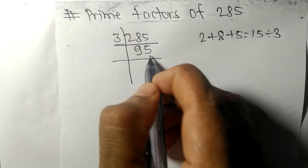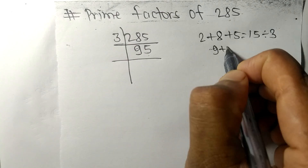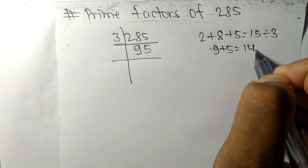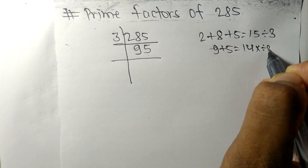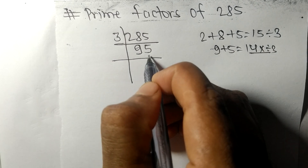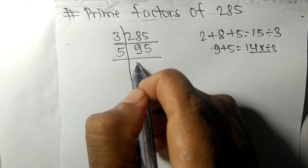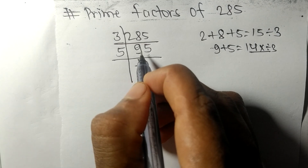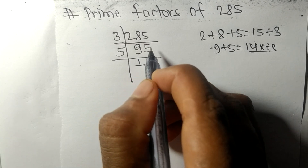95 ends in 5 and its digit sum is 9 plus 5, which equals 14. 14 is not divisible by 3, but 95 is divisible by 5. Dividing: 5 times 1 is 5, remainder 4; bring down to get 45, and 5 times 9 is 45.